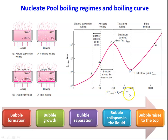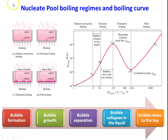Looking at the boiling curve, the temperature difference ΔT = T_surface − T_saturation is on the x-axis, and the amount of heat transfer is on the y-axis. There is a gradual increase in heat transfer. The heat transfer in this region is calculated as q = h·A·ΔT, where h is the natural convection heat transfer coefficient calculated using the Nusselt number correlation. These natural convection calculations apply up to point A.